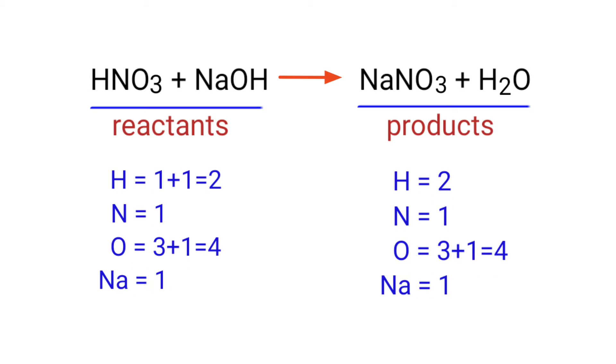If you look at this equation, the number of atoms at the reactants side are the same as the number of atoms at the products side. There are two hydrogen atoms, one nitrogen atom, four oxygen atoms, and one sodium atom on both sides.